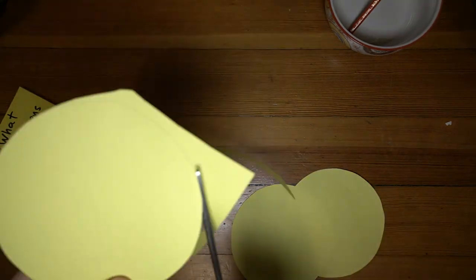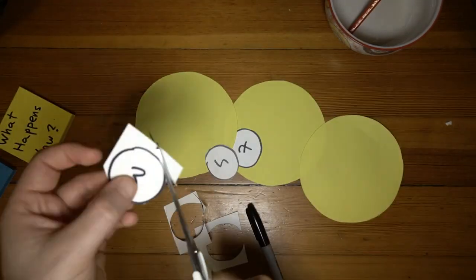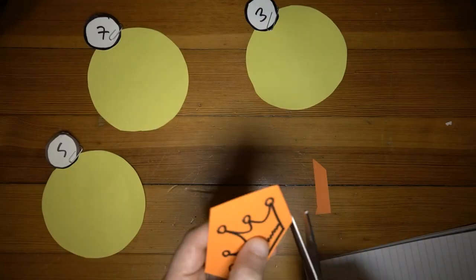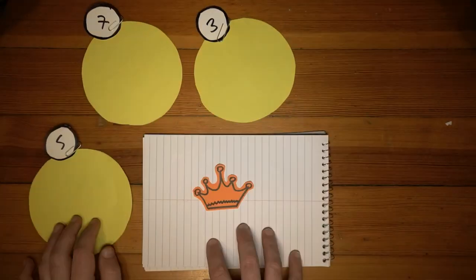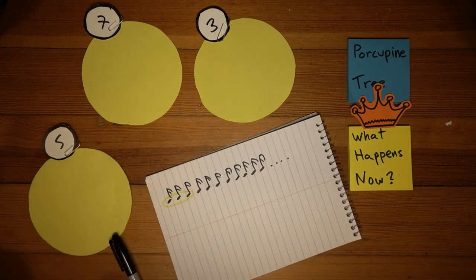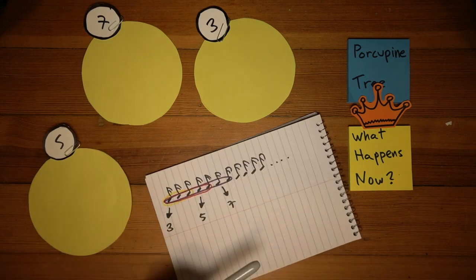So here's what's up. We have three elements, 5, 7, and 3. And we have this crown. This crown is going to be given to whoever is the host. By the way, all of these are just different groupings of the same subdivision. We're always in 16 notes.